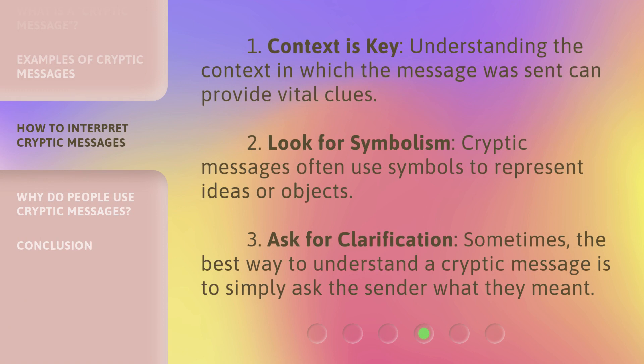1. Context is key. Understanding the context in which the message was sent can provide vital clues. 2. Look for symbolism. Cryptic messages often use symbols to represent ideas or objects. 3. Ask for clarification. Sometimes, the best way to understand a cryptic message is to simply ask the sender what they meant.